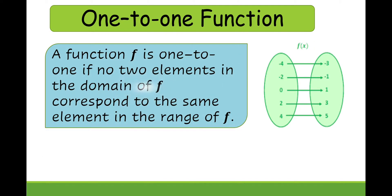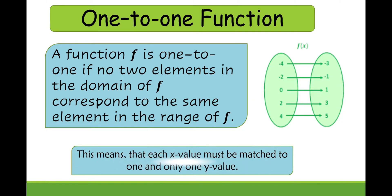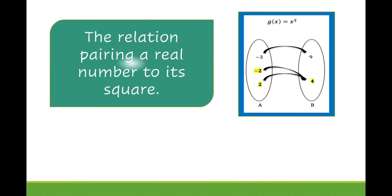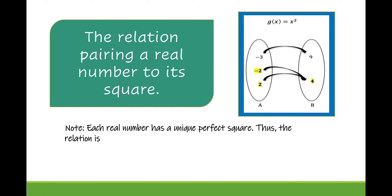Therefore, a function f is one-to-one if no two elements in the domain of f correspond to the same element in the range of f. This means that each x value must be matched to one and only one y value. For example, the relation pairing a real number to its square: note that each real number has a unique perfect square, so the relation is a function.